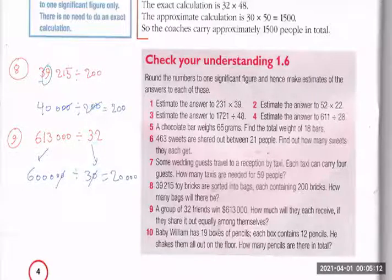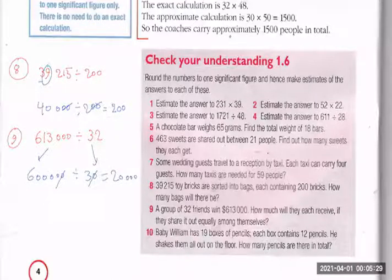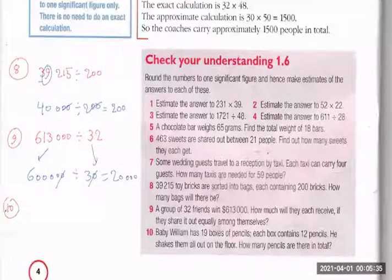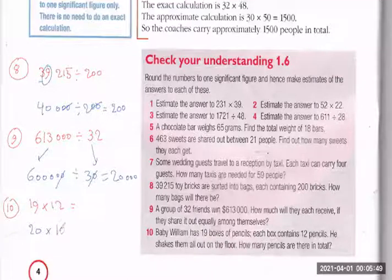Question: Baby William has 19 boxes of pencils, each box contains 12 pencils. He shakes them all out on the floor — how many pencils are there in total? So 19 times 12. Round to one significant figure: 19 becomes 20, and 12 becomes 10. 20 times 10 gives 200 pencils.